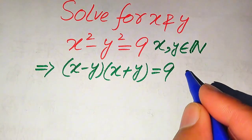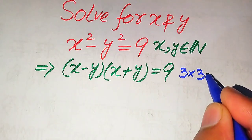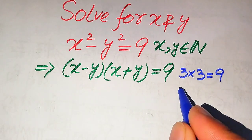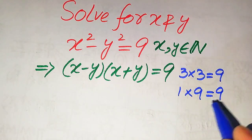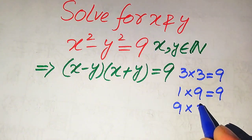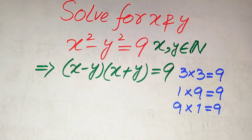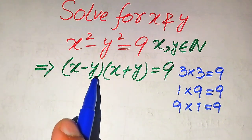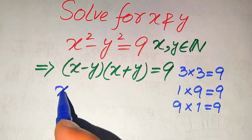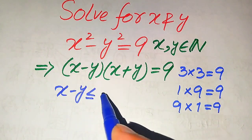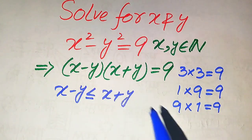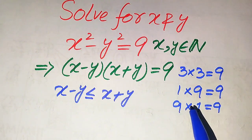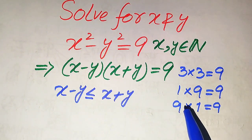We need to find pairs of natural numbers whose product is 9. The possibilities are: 3 × 3 = 9, 1 × 9 = 9, and 9 × 1 = 9. These are the three possibilities in which the product of two numbers becomes 9.